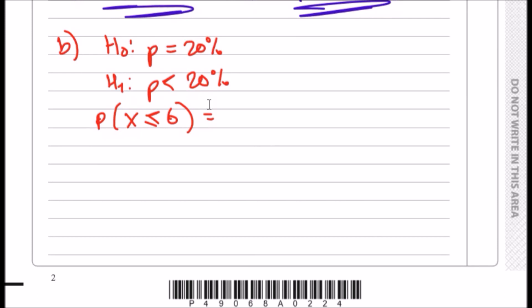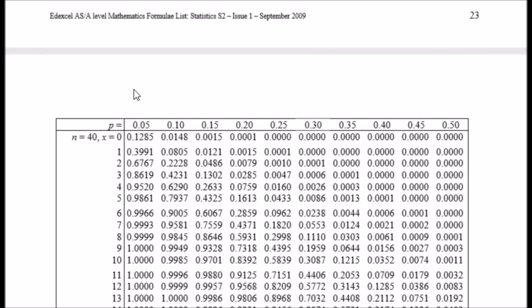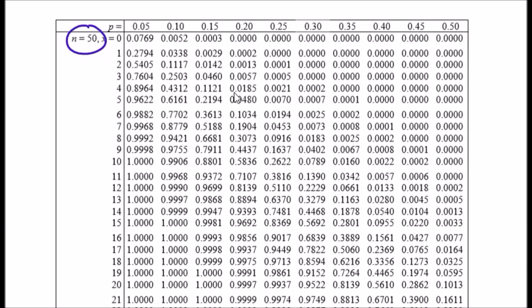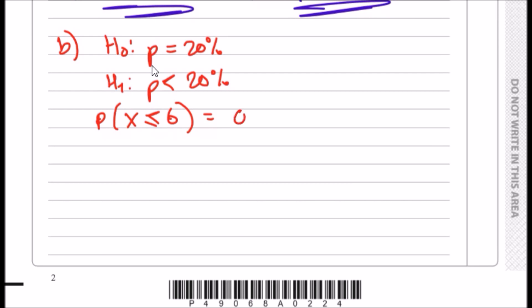Let's look at the tables. Going to n equals 50, keep going down your table until you find the right proportions. n equals 50 and we're looking at 20%. When x equals 6, the probability x is less than or equal to 6, we should get exactly 0.1034.